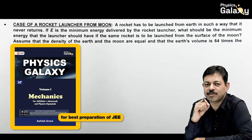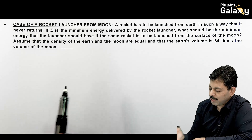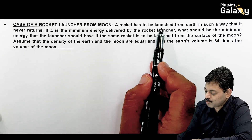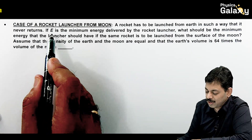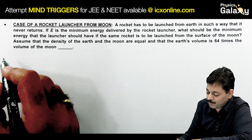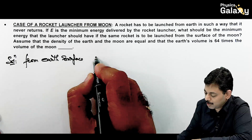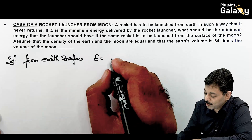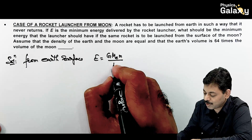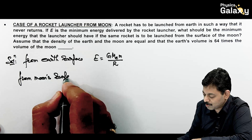We need to provide enough energy so that the body's final total energy becomes zero. The rocket must be launched from Earth such that it never returns. The minimum energy E delivered by the rocket launcher from Earth's surface satisfies: E = GMₑ·m/Rₑ, where Mₑ is Earth's mass, m is the rocket's mass, and Rₑ is Earth's radius.